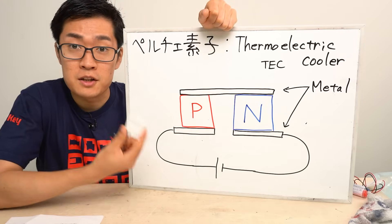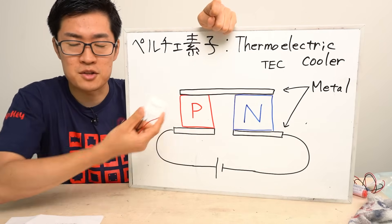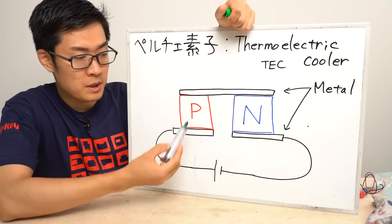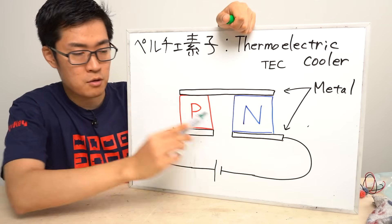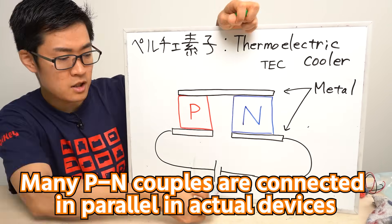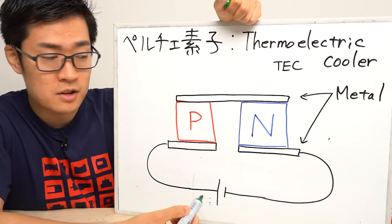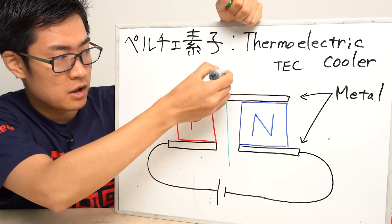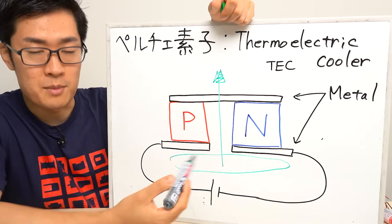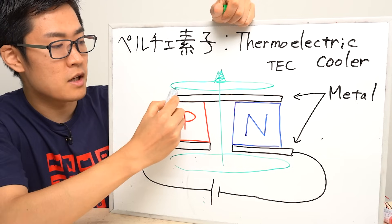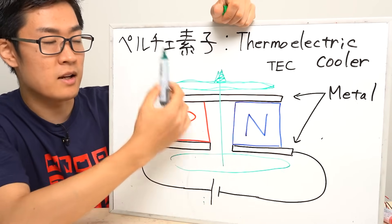Actually, Peltier devices don't use joined metals. A Peltier device consists of metals and semiconductors joined together — a P-type semiconductor and an N-type semiconductor joined together with metal plates. When a current is applied, heat starts to be transferred in one direction. The bottom side is absorbed of heat, which means it gets cold. The absorbed heat is transferred to the top side and is dissipated from there, so the top side gets hot.